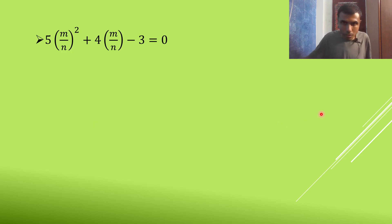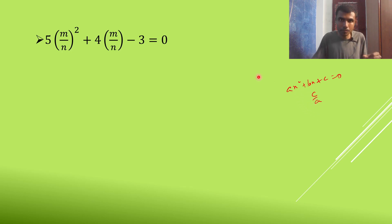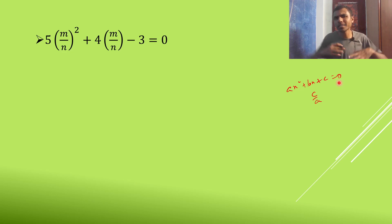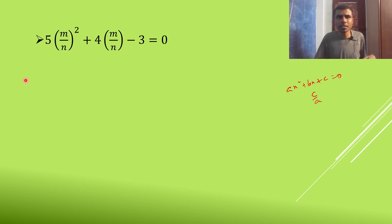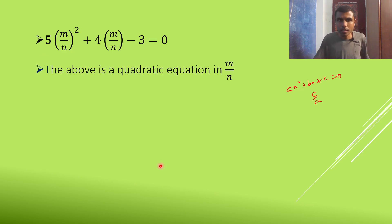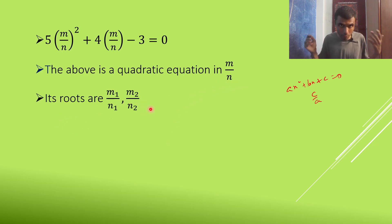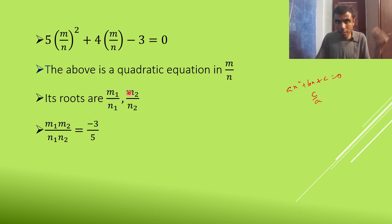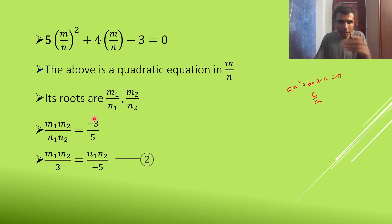For a quadratic equation AX² + BX + C = 0, the product of roots is C/A. Here C = −3 and A = 5. Since this is a quadratic in M/N, let the roots be M₁/N₁ and M₂/N₂. So the product of roots: (M₁/N₁)(M₂/N₂) = −3/5. Rearranging: M₁M₂/3 = N₁N₂/(−5). Mark this as equation 2.